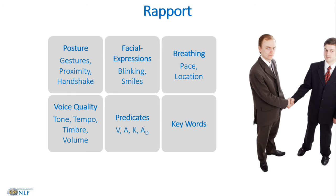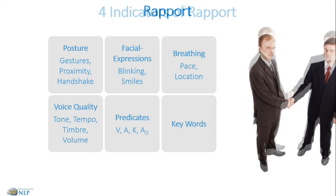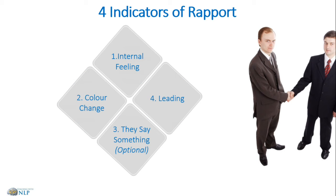So these are the things we can match and mirror to build rapport. How would you know that you've got rapport? There are four indicators. The first is an internal feeling — almost like a butterfly or giddy feeling inside yourself; not that you're in love, just a little bit of excited feeling. The second is you might notice a color shift in the other person. The third, which is optional and sometimes sounds like a chat-up line, is something they might say like 'have we met before?' or 'it feels like I've known you for some time.'